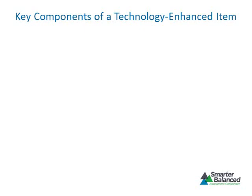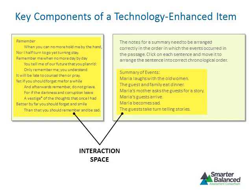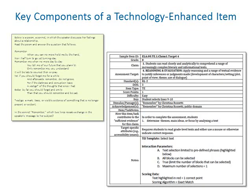There are several important terms when developing technology-enhanced items. The interaction space is the area in which students interact with an item to produce a response. For an item presenting a poem, the interaction space is the area in which students select text blocks. A different item presenting a passage might ask students to order sentences describing events in the passage—the interaction space allows students to select the sentences and then change their order. The task model indicates which type of interaction space should be used.